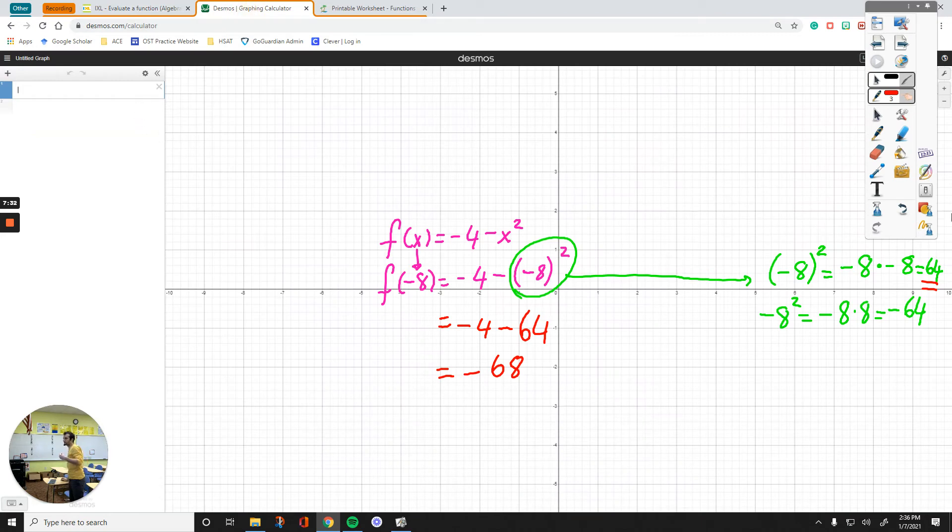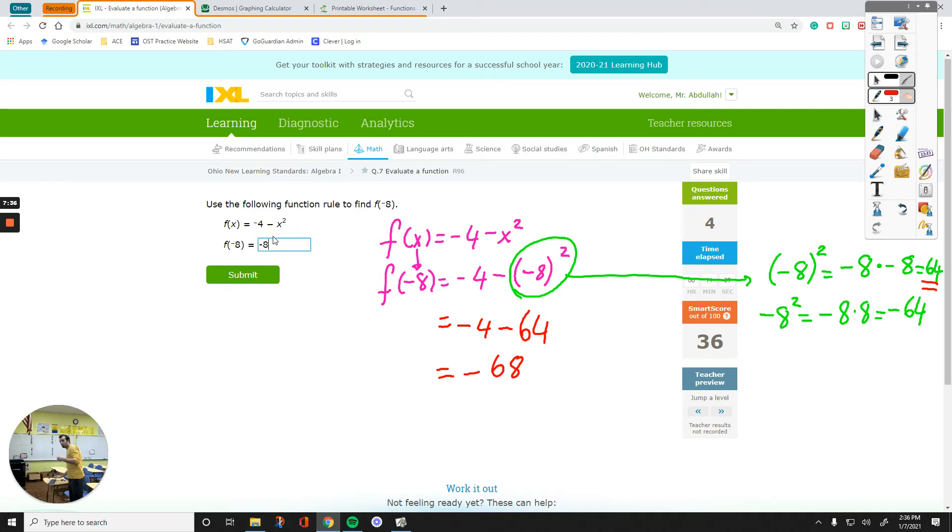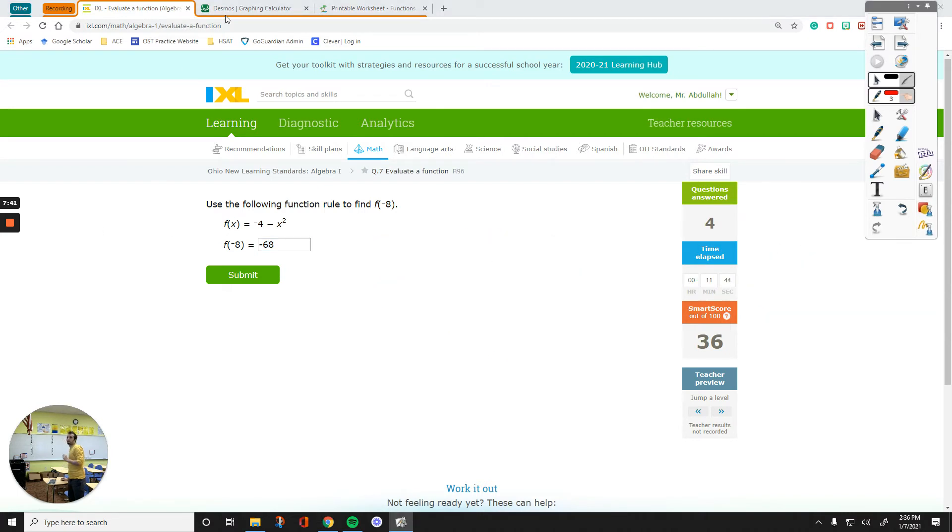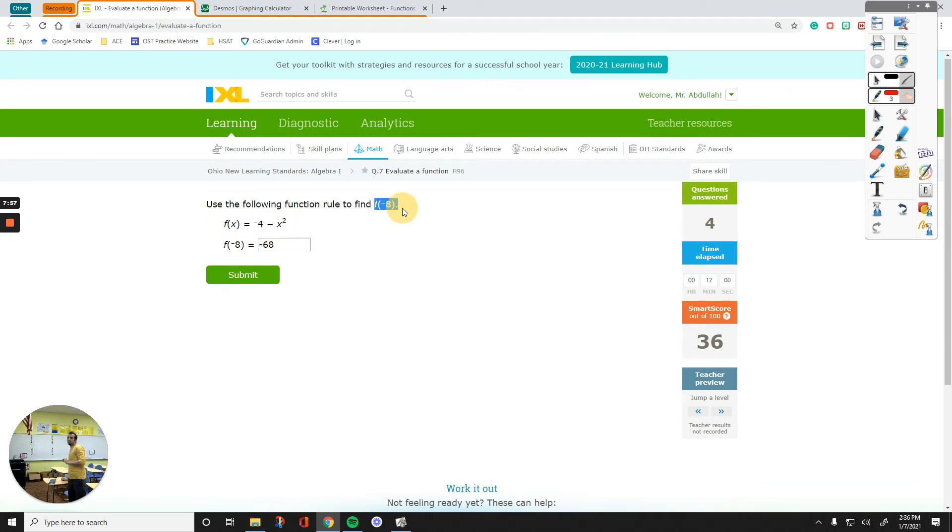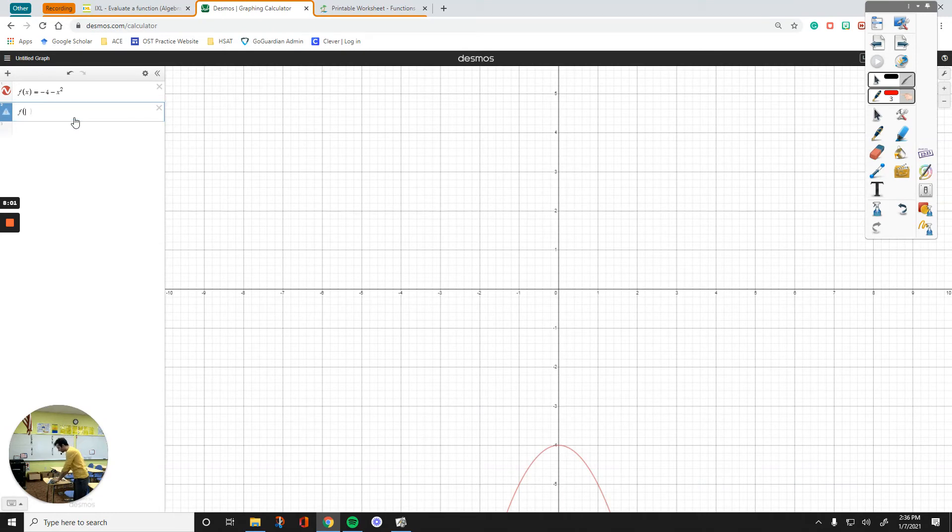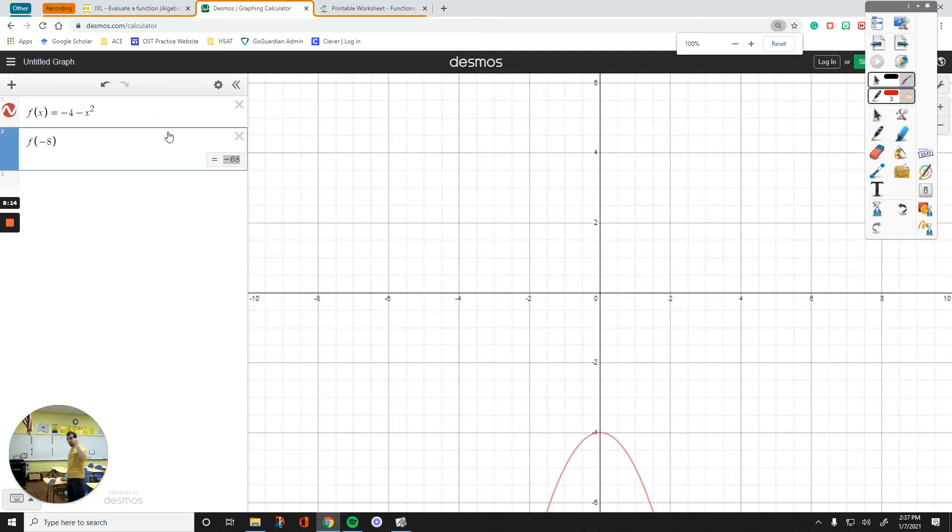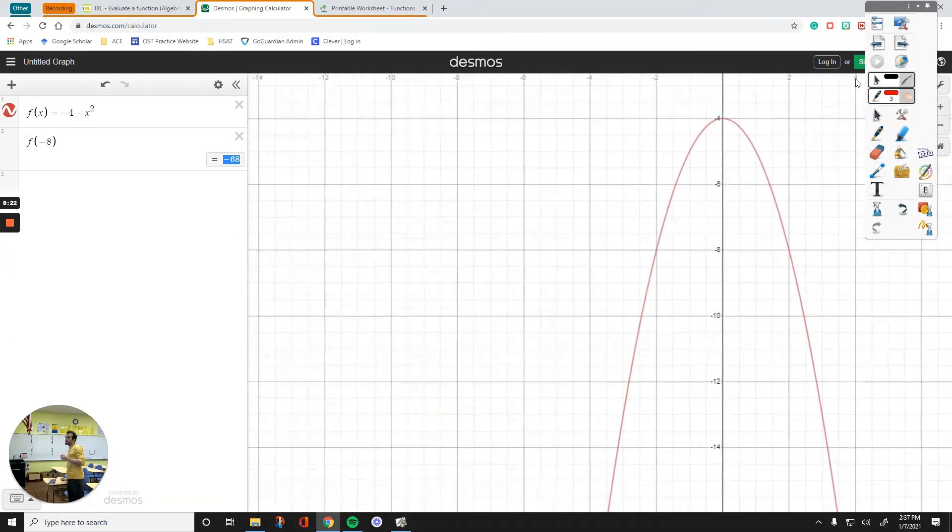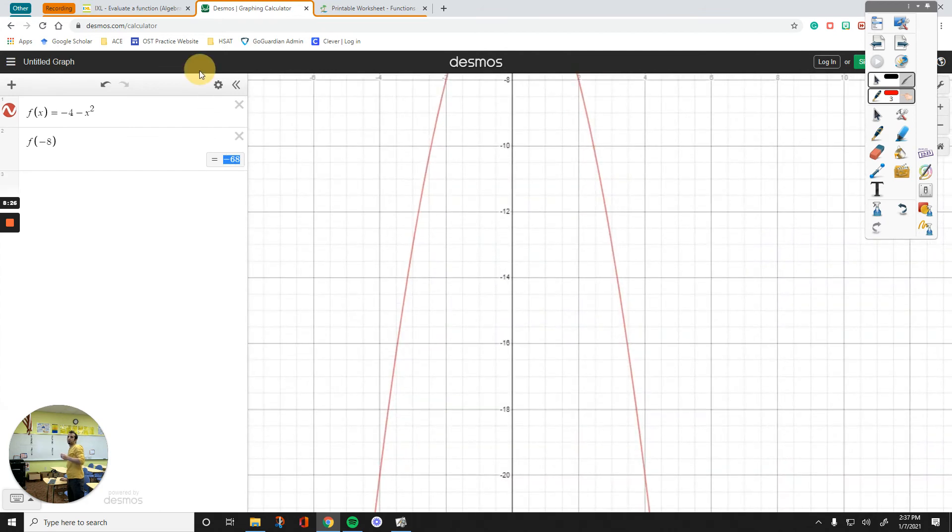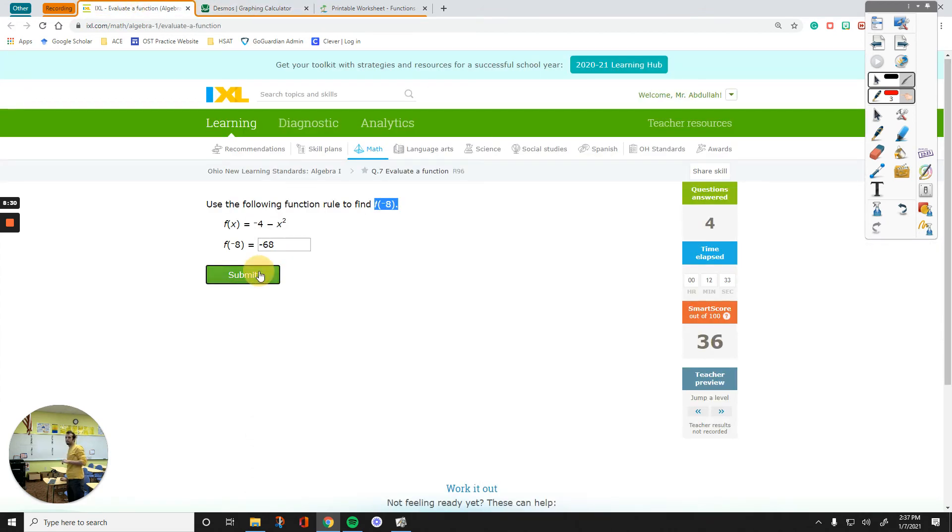Let's just type the exact function on Desmos. F of X. I will type this. I don't want to forget about it. And then, I will remove all of the drawings from the screen. Let's get rid of that. Now, F of X equals, because Desmos can calculate your functions, negative 4 minus X squared. And then, that's my function. I type the whole thing, and then, this is what I am going to type. F of negative 8. F of negative 8. And then, it will tell me what the answer is. Negative 68. So, again, sorry about that zoomed out graph. And you can also see the graph over here. So, we know that now the answer is negative 68. Let's submit it, and then move on.